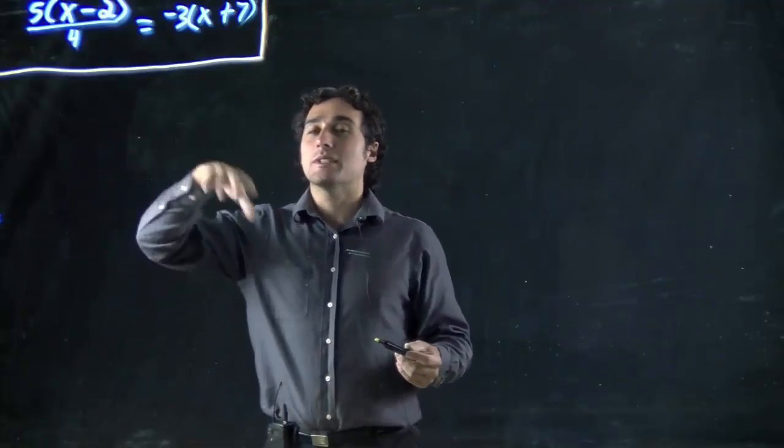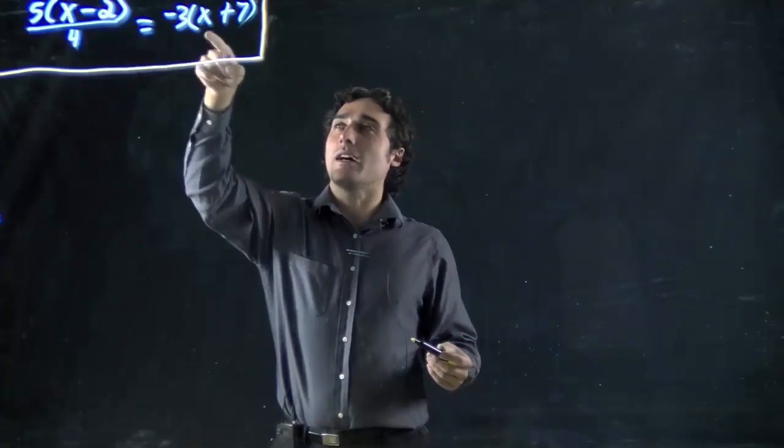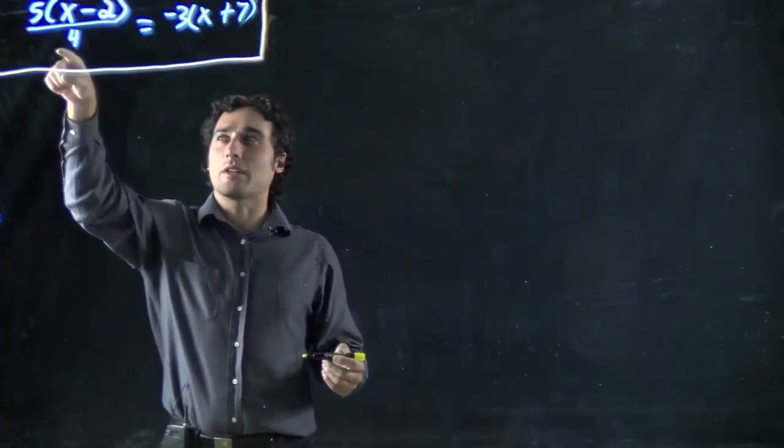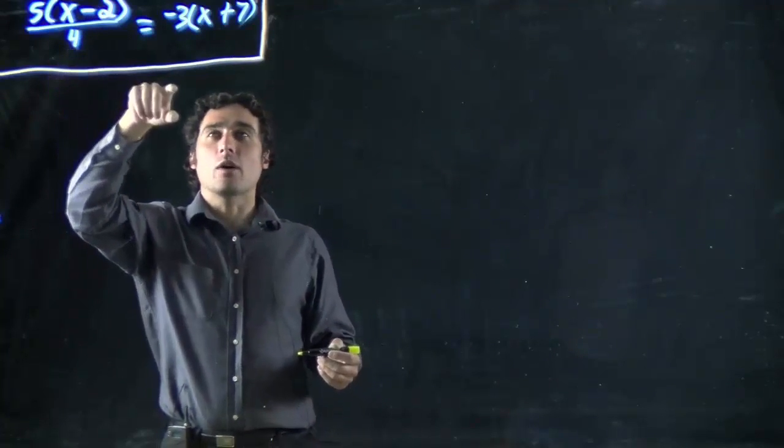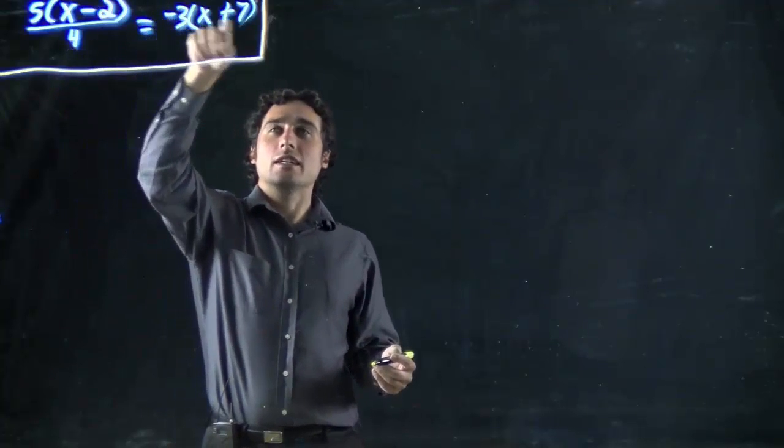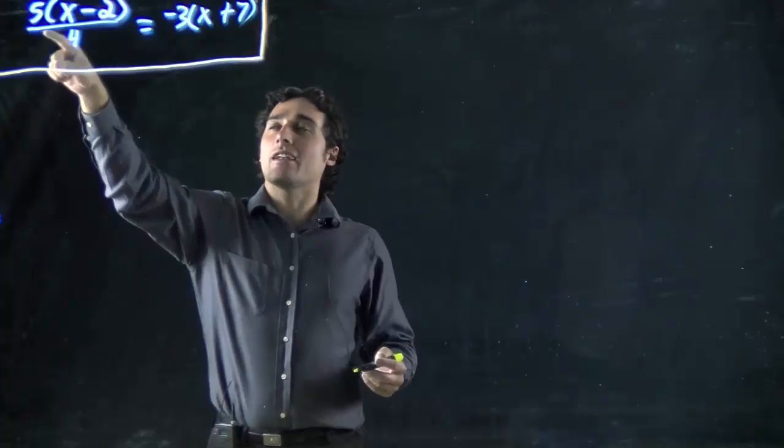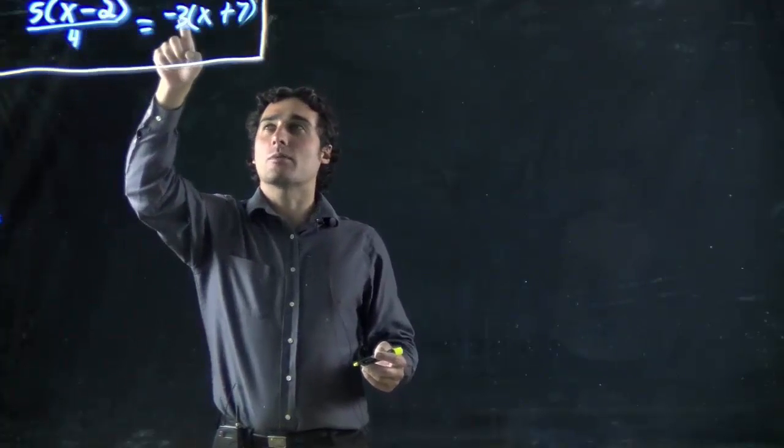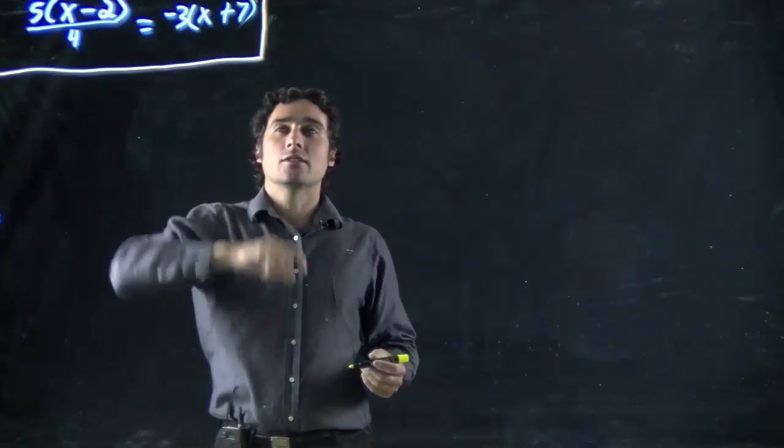So, as we've been saying, the easiest thing to do is multiply the number into the brackets. In this case, we also have a number on the bottom over here. If I wanted to, I could multiply this minus 3 into the equation and then later figure out the 4. But I could also multiply both sides by 4 to bring it over and combine it. So, what do I mean?